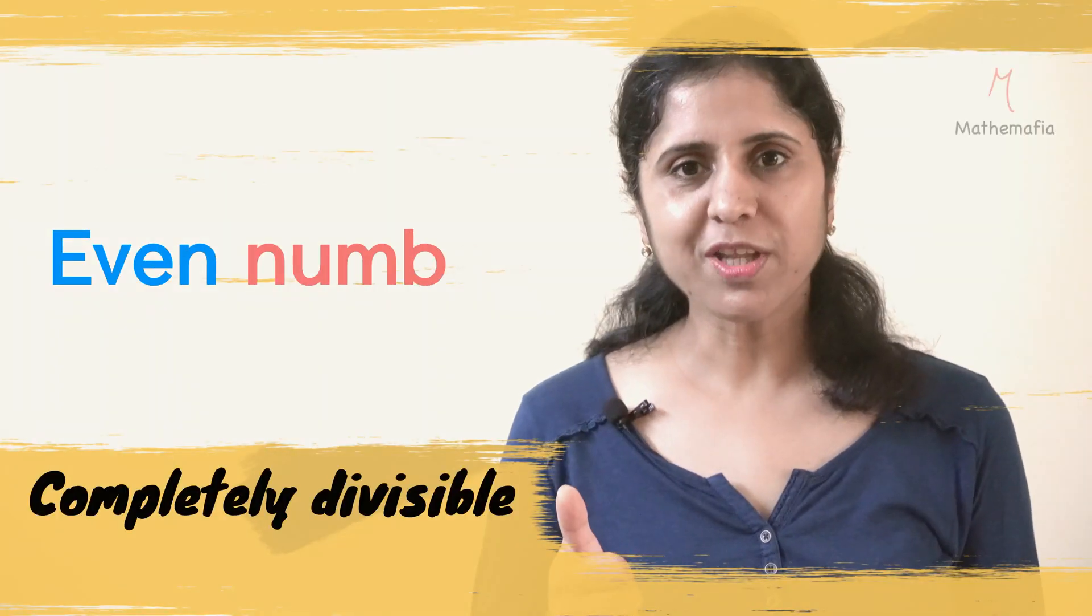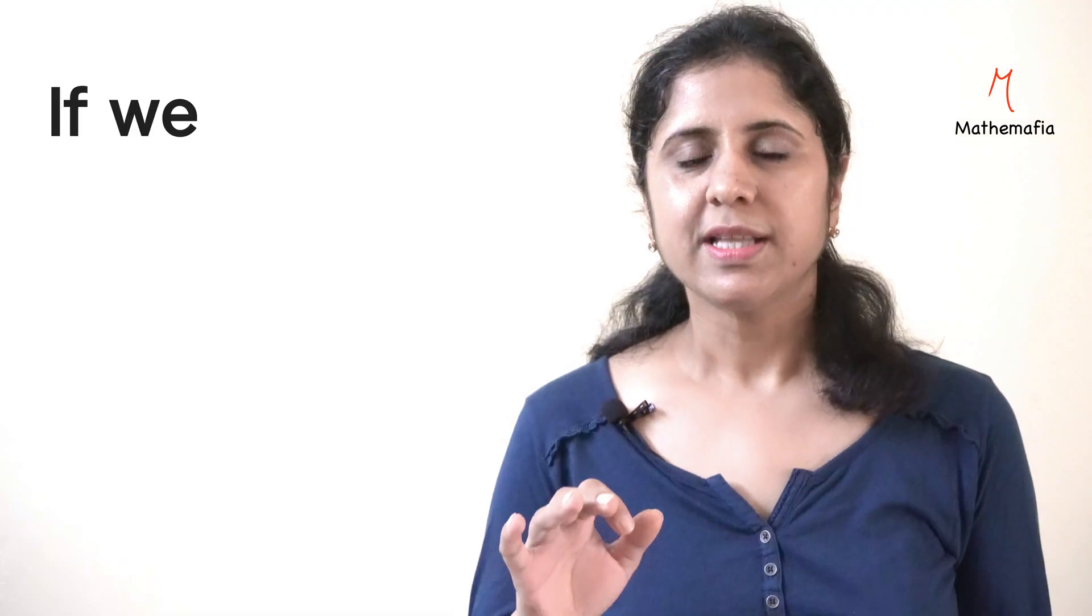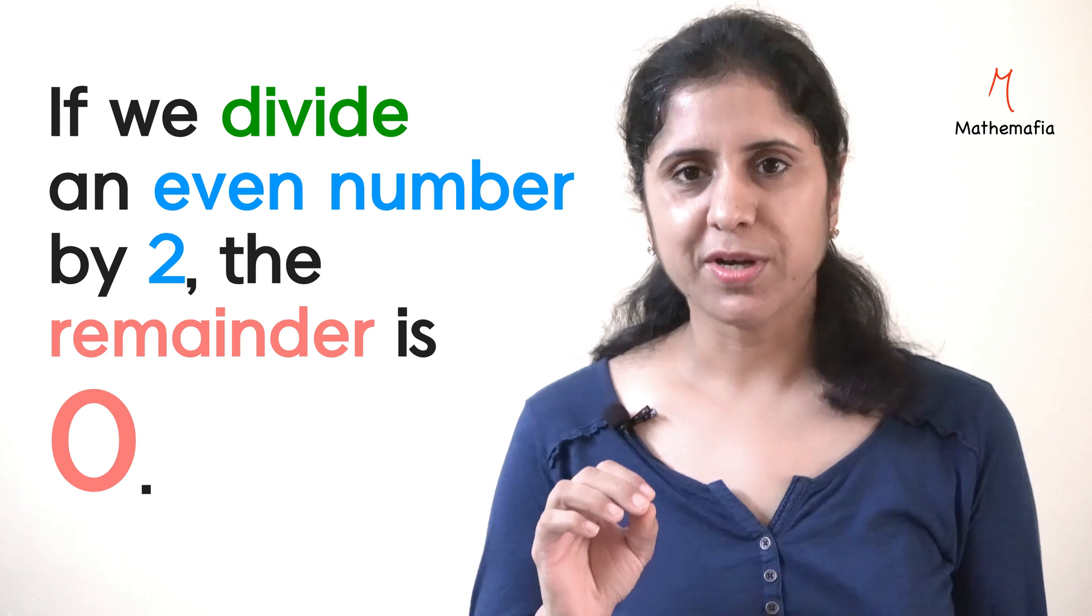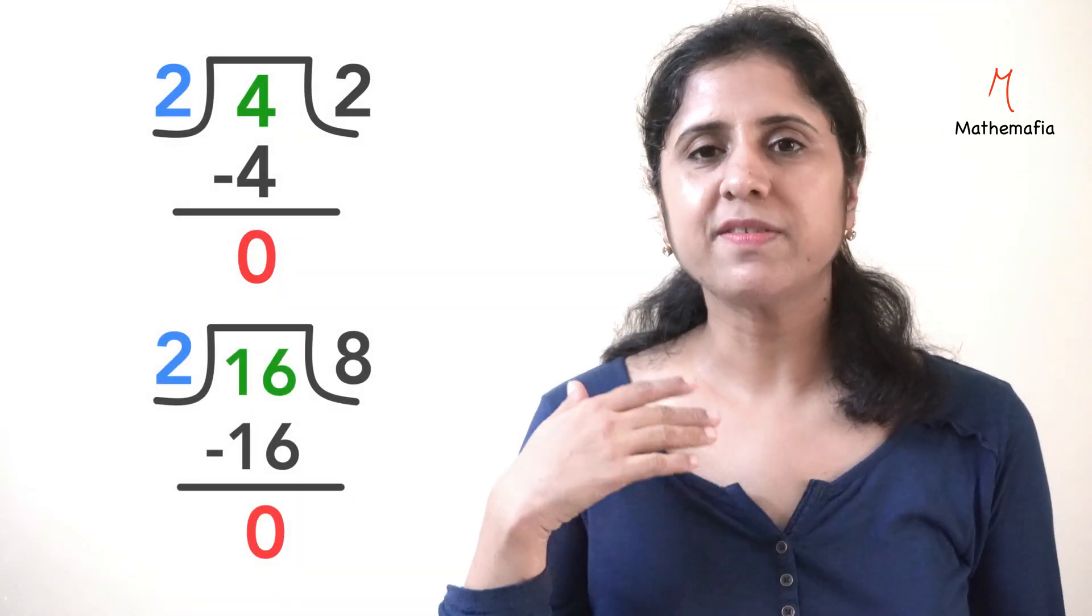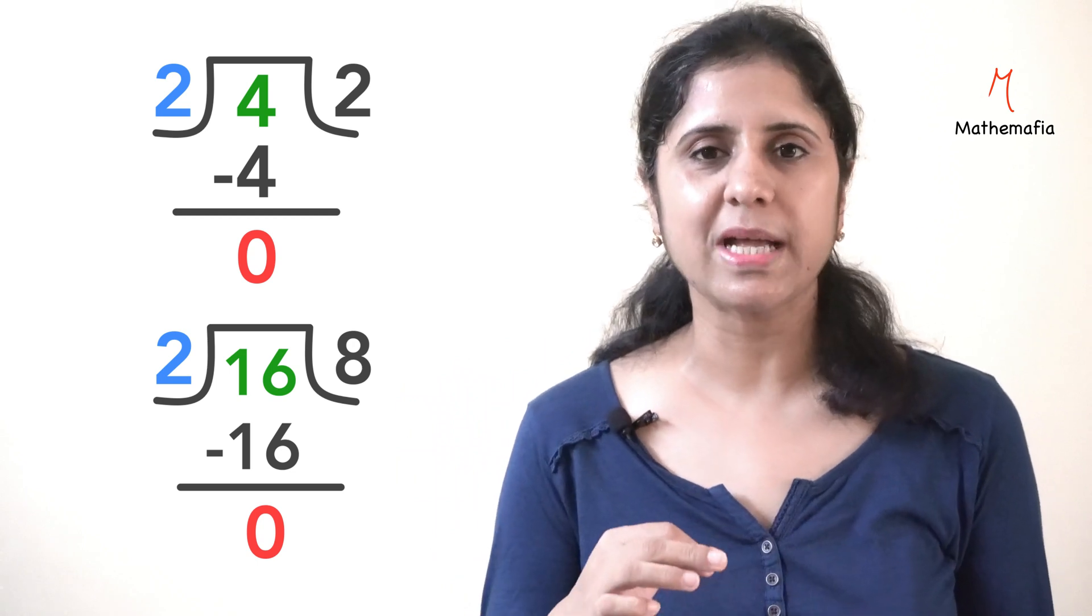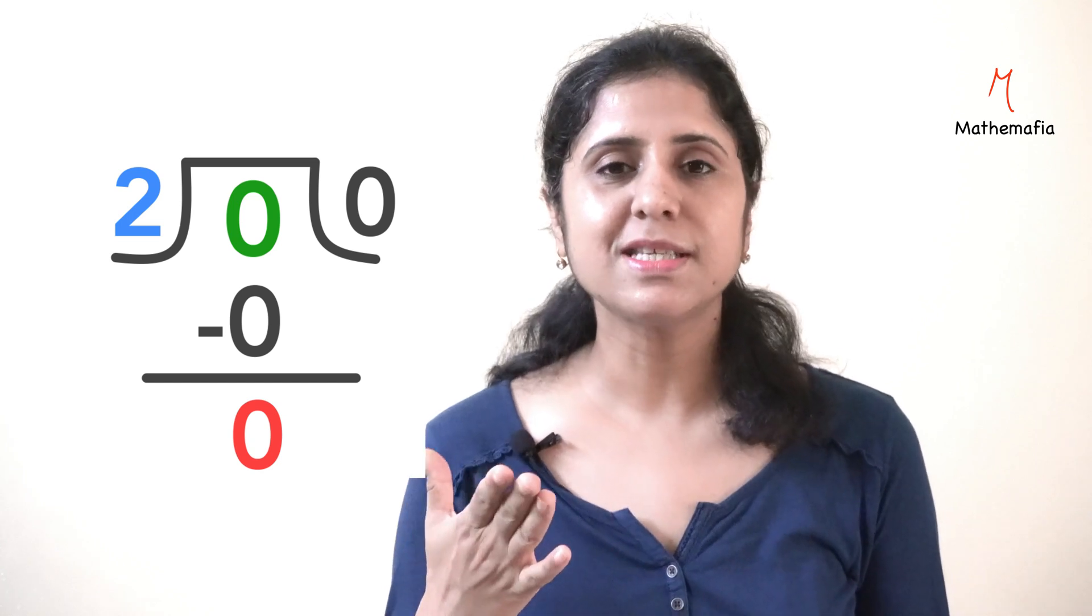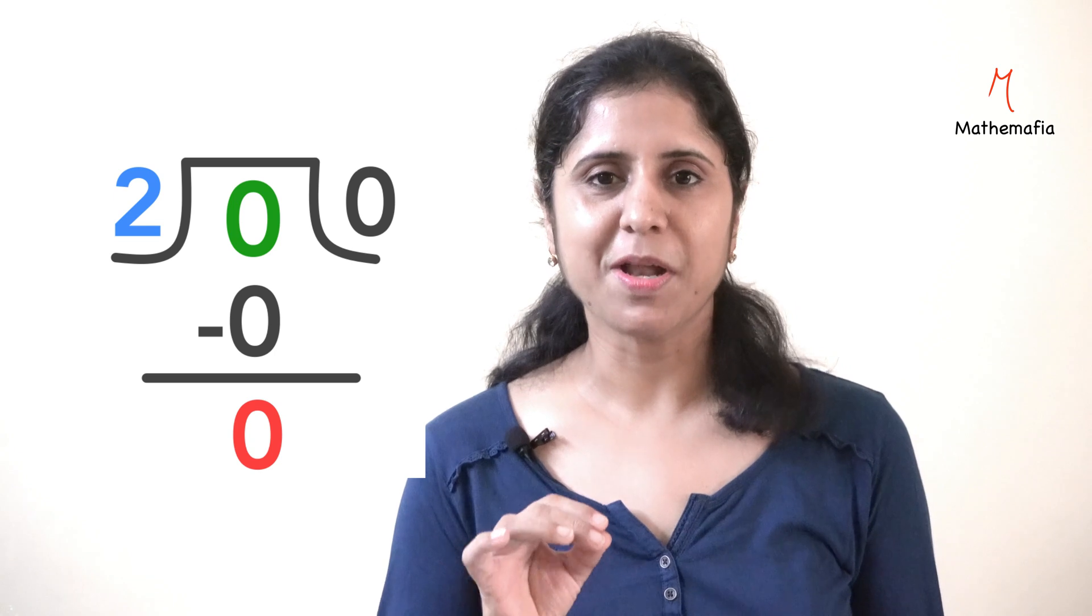The first property of an even number is that it is completely divisible by 2. That is, if we divide an even number by 2, the remainder is 0. For example, divide 4 by 2, the remainder is 0, divide 16 by 2, the remainder is 0 and so on. Similarly, if we divide 0 by 2, the remainder is 0. So, 0 satisfies the first property of even numbers.